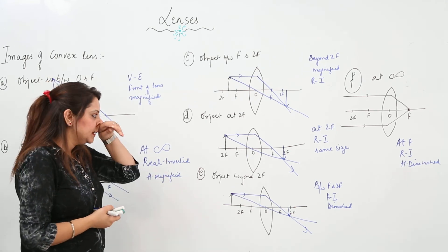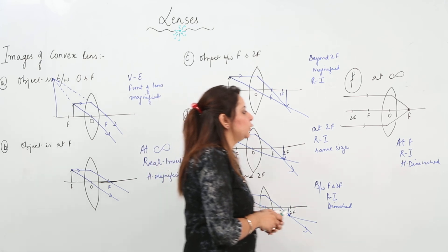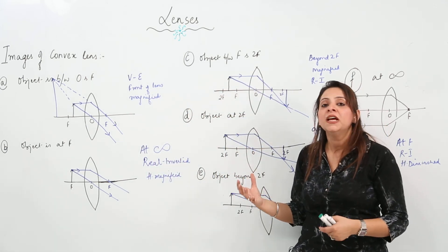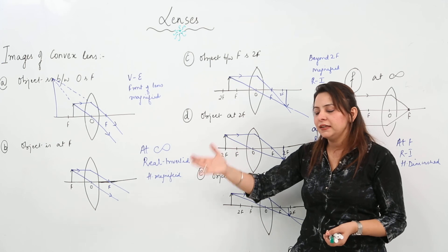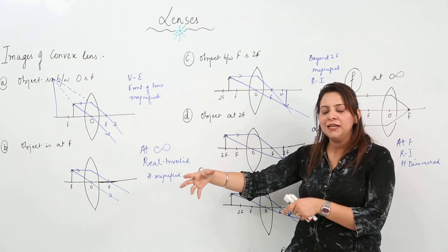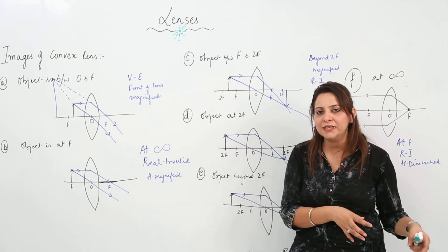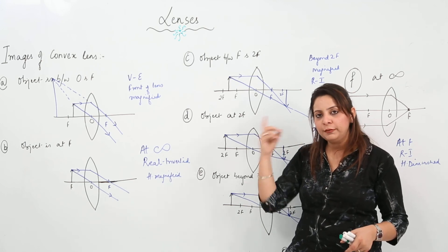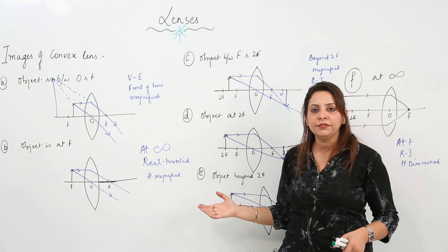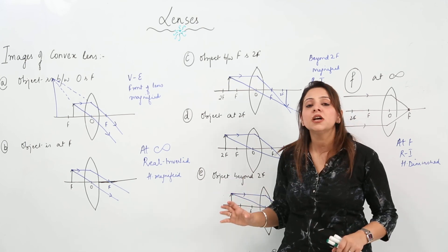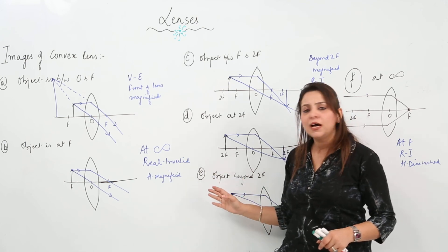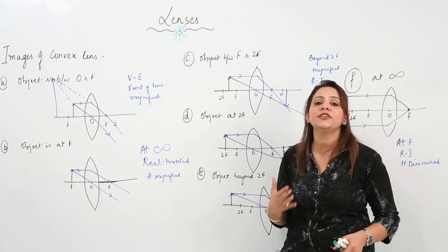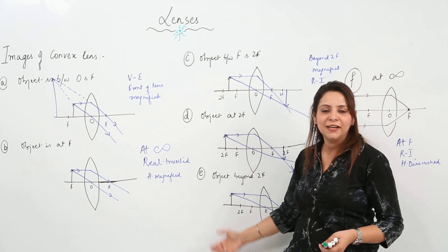Just try them out. The best way to learn them is to first learn the tabular form — when the object is at a certain place, the image is formed at this place with this nature. Then use that tabular knowledge to draw the figures, and your figures won't be wrong. Just practice — it's very simple, one of my favorite chapters in physics.